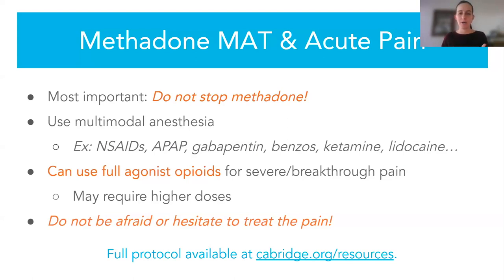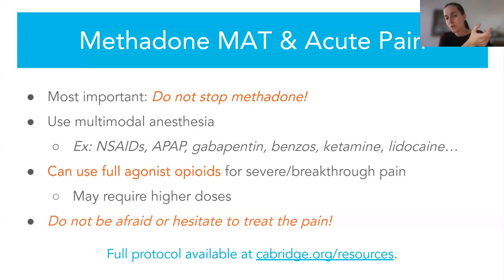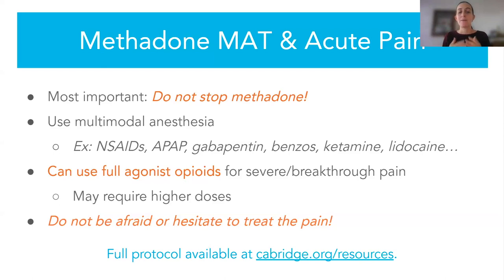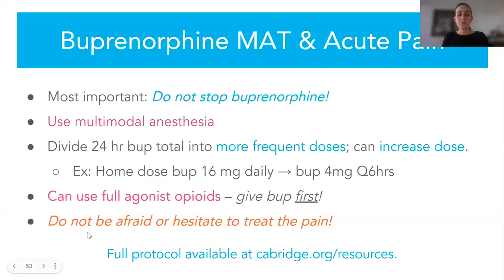Another edge case: acute pain management. If a patient is admitted to the hospital — say a trauma or burn patient needing multiple surgeries — and they're already on their methadone or buprenorphine, you continue those medications absolutely. That medication is treating their withdrawal and cravings and keeping them inside the hospital — it is not going to be enough to treat their pain. Then add on multimodal analgesics: NSAIDs, Tylenol, gabapentin, and it's okay to use full opioid agonists on top just like you would for any other patient. If they're going to have serious surgery, they might need full opioid agonists at higher doses than other patients — and that's not them being drug-seeking. We know they're going to have an increased tolerance.